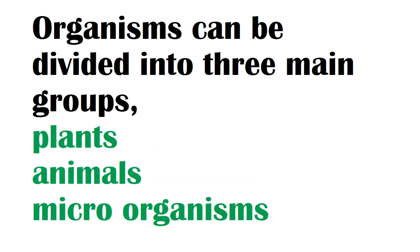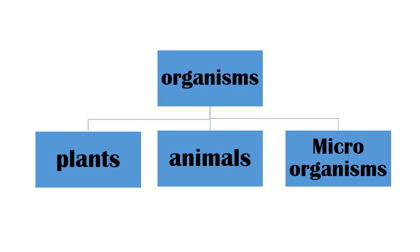Organisms can be divided into three main groups: plants, animals, and microorganisms. In this hierarchy, organisms are clearly categorized into these three groups. Here is what we have learned from Grade 6 Unit 1, Wonders of the Living World, first part. I think you have gained good knowledge about this lesson. Thank you.